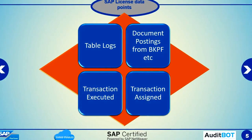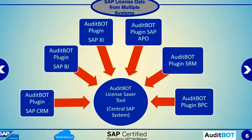As part of the SAP license optimization process, we deploy the tool in a central system and the plugin into all your child systems. The plugin collects table logs, posting logs, change logs, and transaction execution logs, and transactions assigned to the users. When we have multiple systems, we install the AuditBot SAP license optimization tool in one central system and the plugin in all the satellite systems. Then the data can be downloaded or extracted through remote function call in the central system.